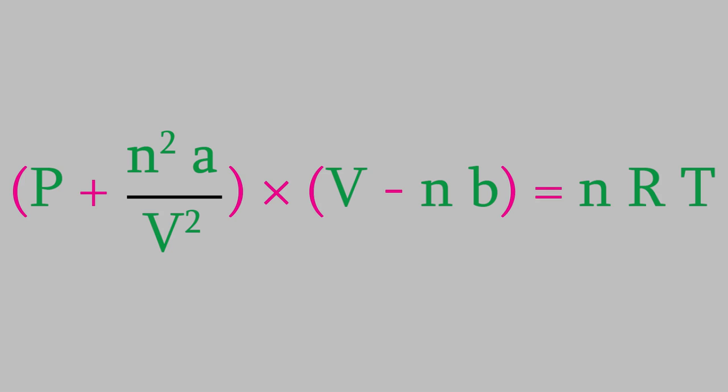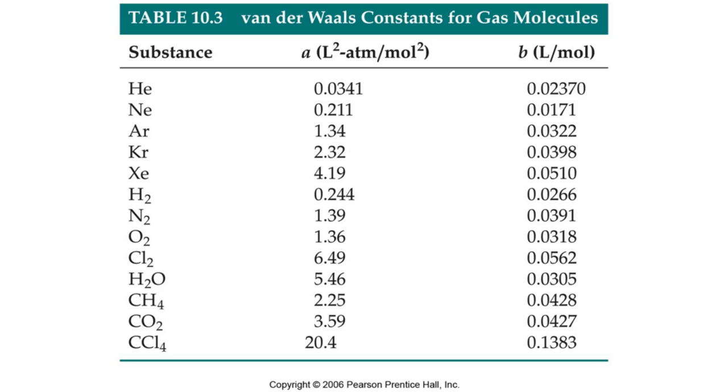Notice that each of the two corrections in this equation contains a constant, a or b. A and b are different for every compound, so we need to look them up in a book or a table in order to use them in the equation. Here's a table that lists several values of a and b for different gases. Notice that the values kind of make sense.